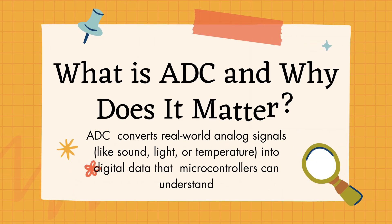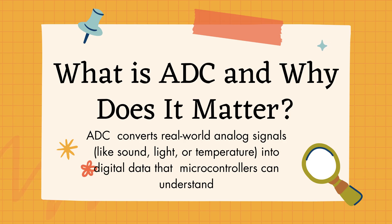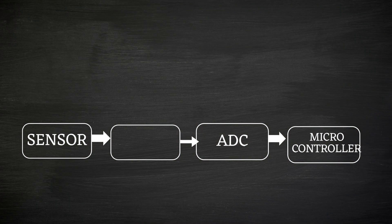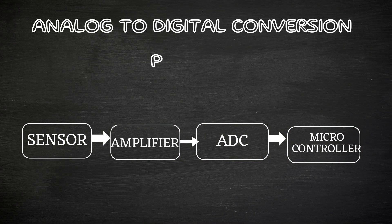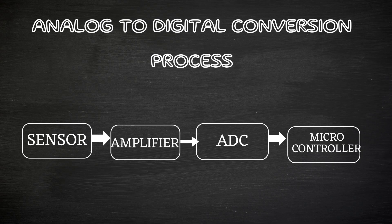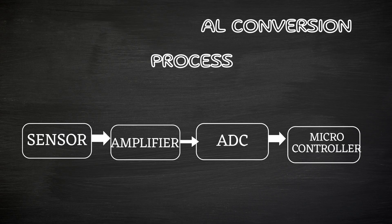ADC converts real world analog signals like sounds, lights, or temperatures into digital data so that microcontrollers can understand. A sensor detects things like light or temperature and gives an analog signal, an amplifier boosts this signal, and then ADC converts it into digital form. Finally, the microcontroller uses that digital data to process or control devices.